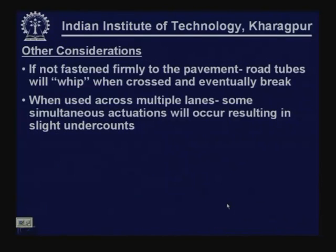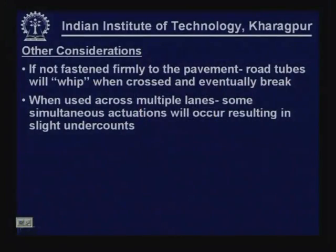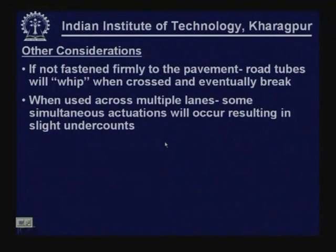If not fastened firmly to the pavement, road tubes may get damaged as repeated vehicle crossings will eventually break the tube. When used across multiple lanes, simultaneous actuations may occur — if two vehicles cross the tube at the same time, a single pulse is recorded as if only one axle crossed. This may result in slight under-counts.